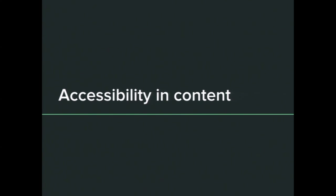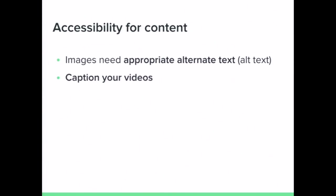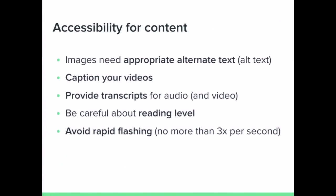For content, you want images to have appropriate alt text attributes. Caption your videos — that's another form of alternate text. Provide transcripts for audio and video, and you can also do audio description for videos. Those things are really important for people with disabilities, and it's also great SEO. Watch out for your reading level — make sure you're not using language that's too complex for people with cognitive disabilities. Avoid any elements that flash more than three times per second, as that's a potential seizure trigger.